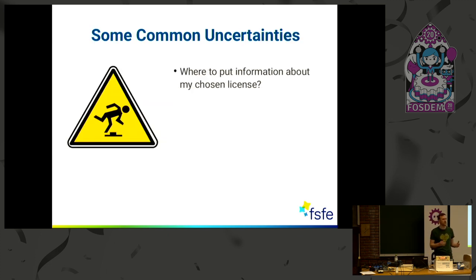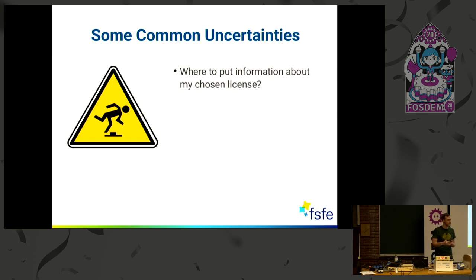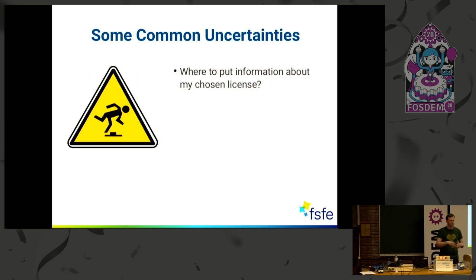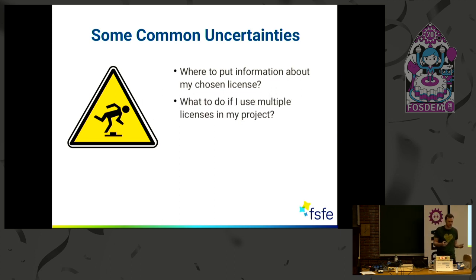There are some common uncertainties when doing free software licensing. The most basic question is: where do I put the information about my chosen license? You do free software, you release it, and you think about which license it should have — under which conditions can users use and reuse your software. But where to put that? In the readme file? In some license text somewhere in the repo? We don't know, or many people don't know.